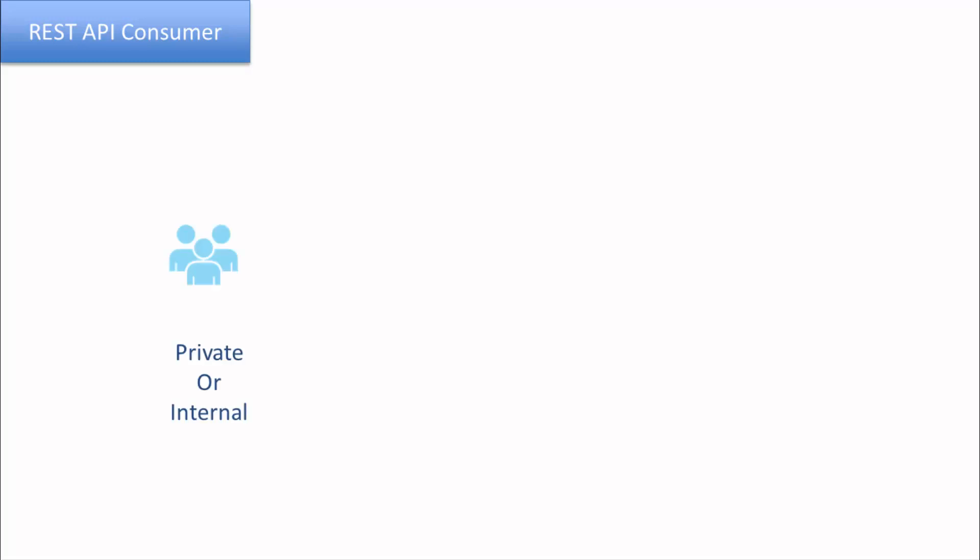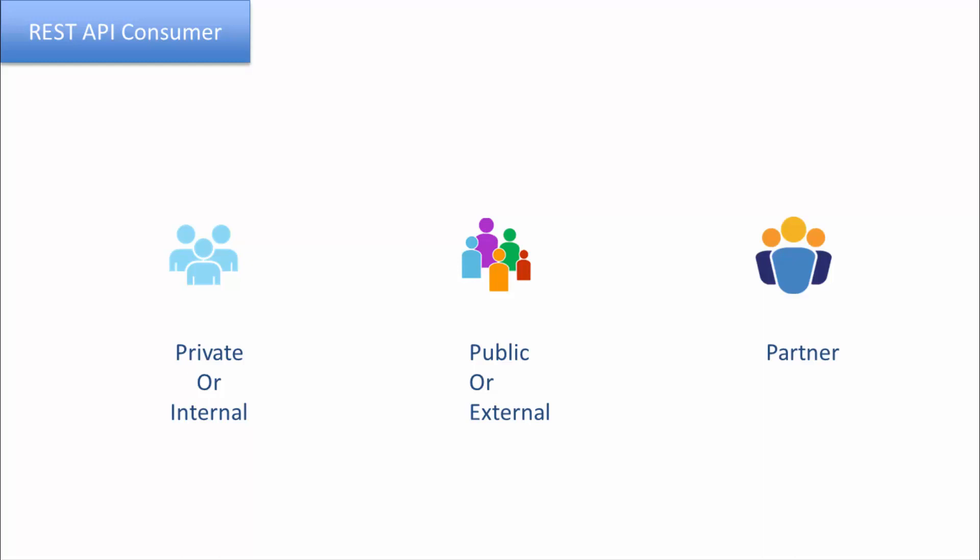There are three types of consumers. The first one is the internal or the private consumer, who is part of the same organization that is the provider of the API. The second one is the public or external consumer, who is outside the organization that owns the APIs. The third one is the partner. Based on these three types of consumers, there are three types of APIs.